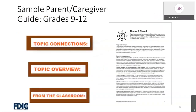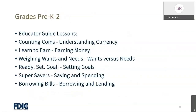This is what the parent caregiver guide table of contents looks like. The sample caregiver guide for grades 9 through 12 is meant to serve as a connection between the classroom and the home. The topics covered in the classroom are identified by lesson, and an overview is given for each topic. This can also be a great resource to use for PTA meetings, parent education nights, and other community activities. The Educators Guide for Pre-K to Second Grade has six lessons with hands-on cross-curricular activities that engage preschool through second grade students, roughly ages four through eight, in discussing and exploring key financial concepts.